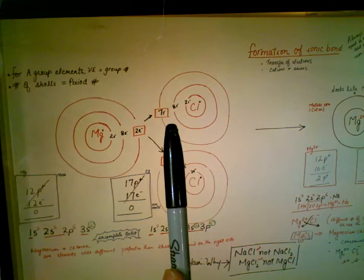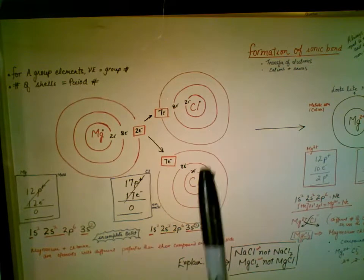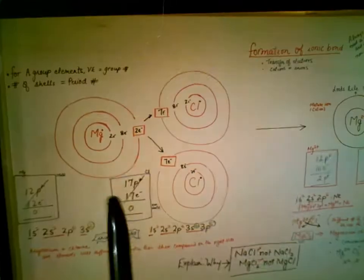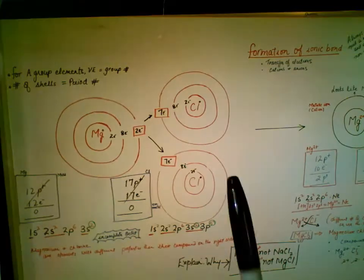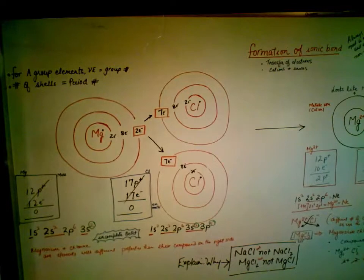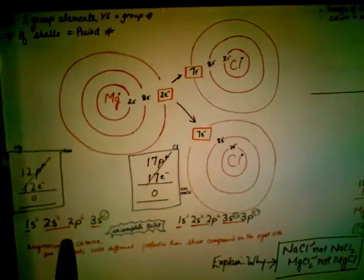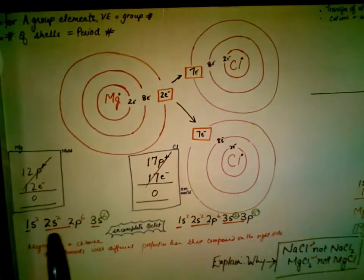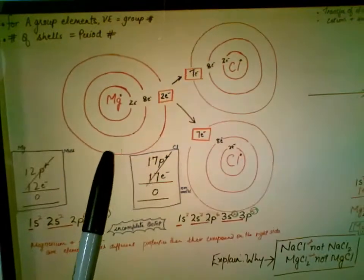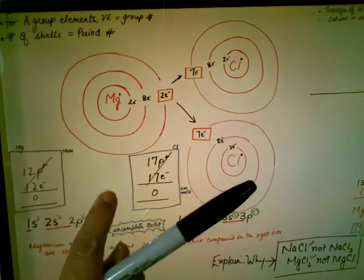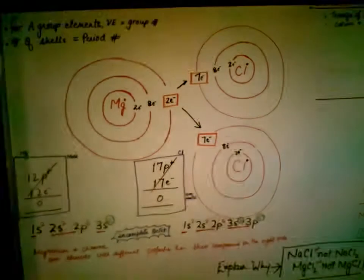Chlorine needs only one more electron to complete its octet, so one magnesium atom needs two chlorine atoms because it must donate two electrons — one to each chlorine. Both atoms are electrically neutral with equal numbers of protons and electrons: magnesium has 12 and 12, chlorine has 17 and 17. Their electron configurations are shown: 1s2 2s2 2p6 3s2 for magnesium, with the third shell being the outermost. The number of shells equals the period number, and valence electrons equal the group number for main-group elements.